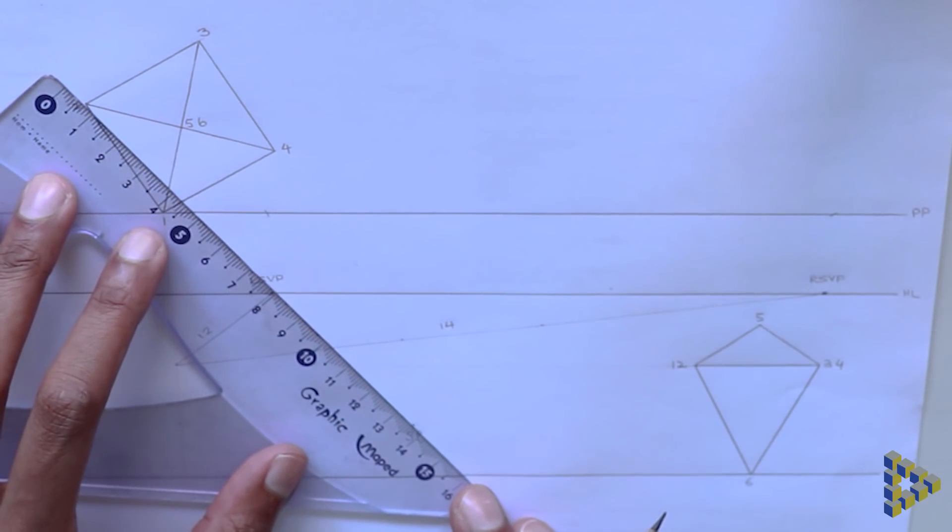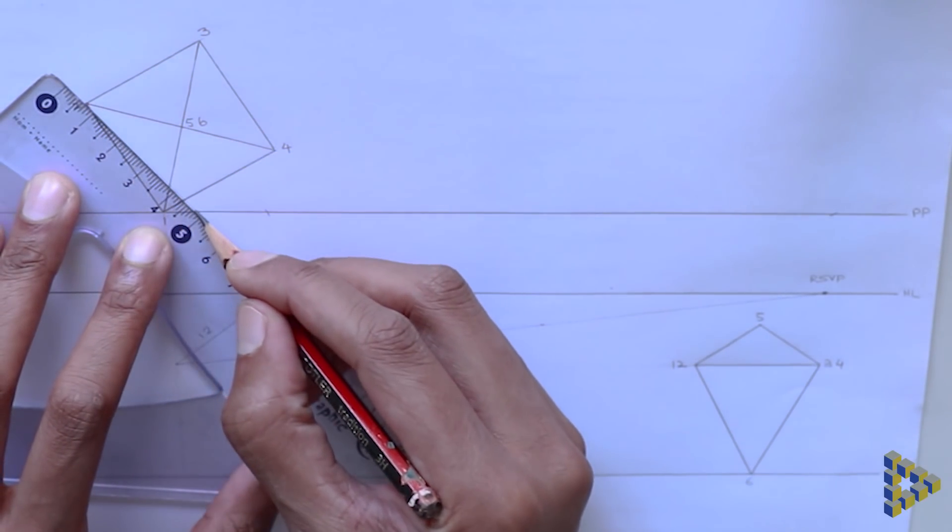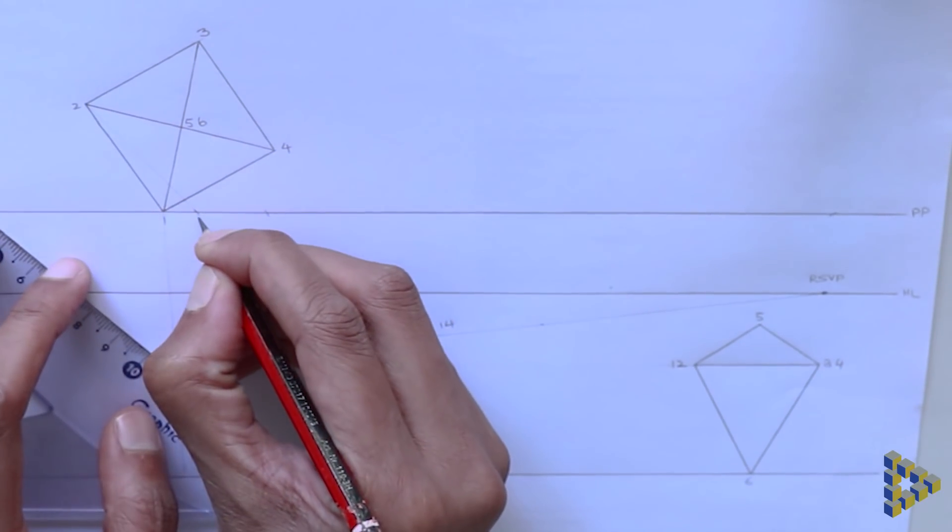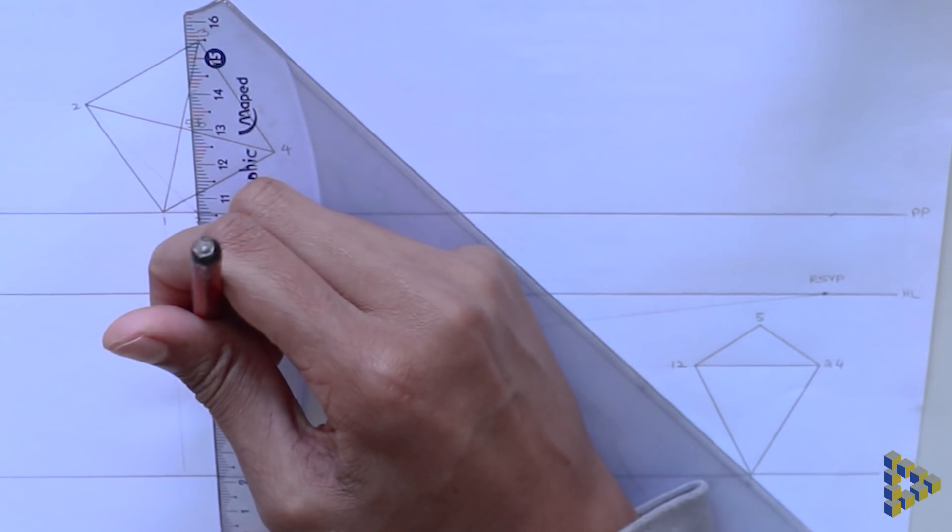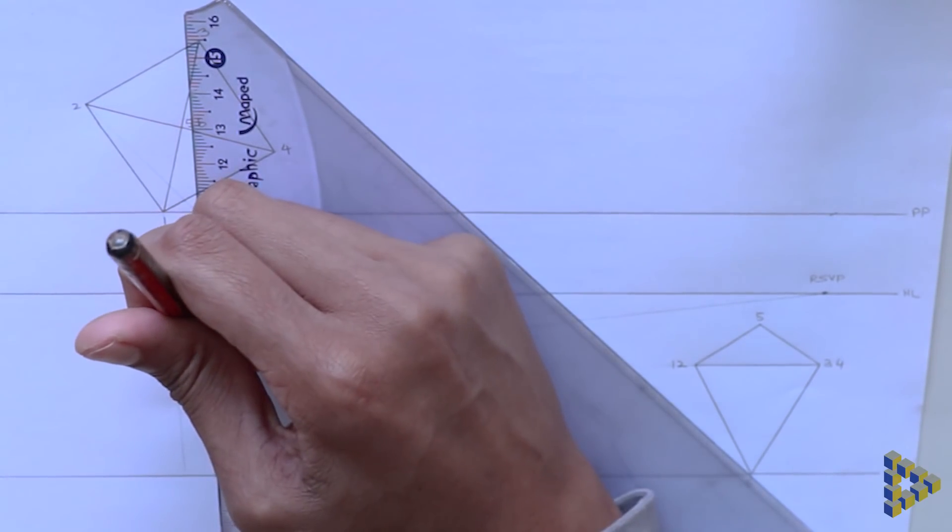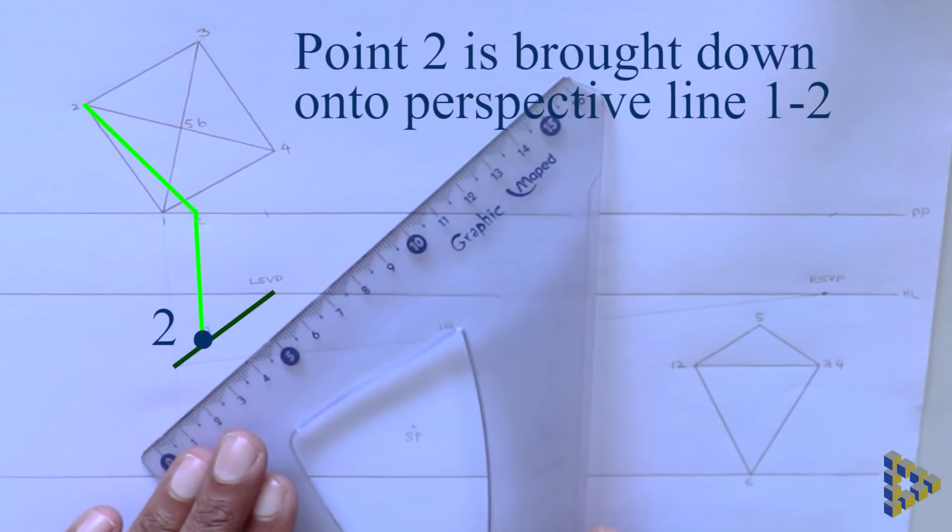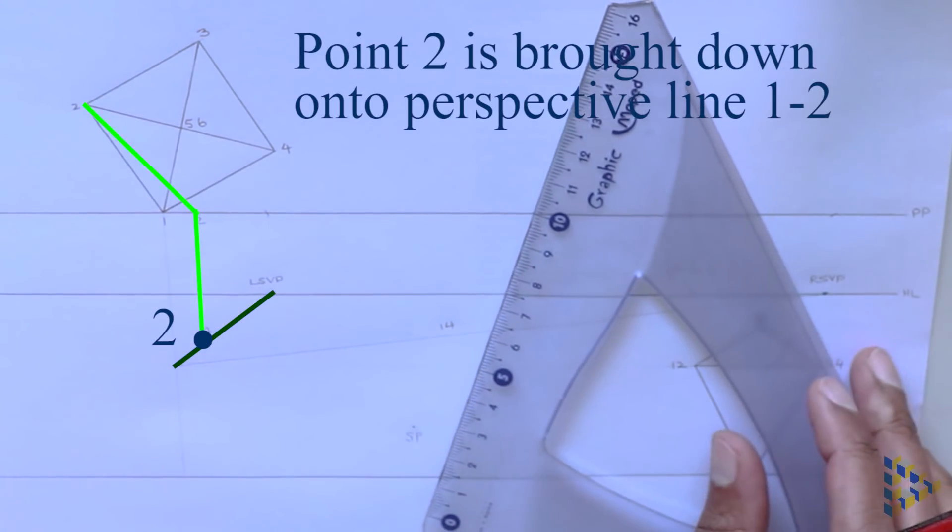We can then bring down points two and four onto their respective perspective lines by placing the point in line with the station point. As the line intersects the picture plane we make a mark and bring down this mark vertically onto its perspective line.